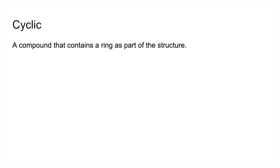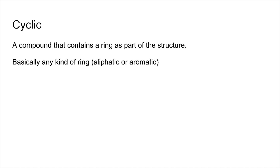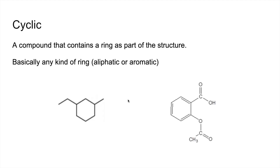And then the final term is cyclic — that's just a compound that contains a ring as part of the structure, so basically any kind of ring. This can be aliphatic or aromatic. It doesn't matter that it's not a benzene ring because cyclic just has to contain a ring. And this one here, that's a benzene ring, but it's still cyclic because any kind of ring makes it cyclic.